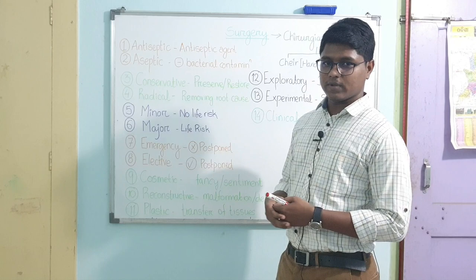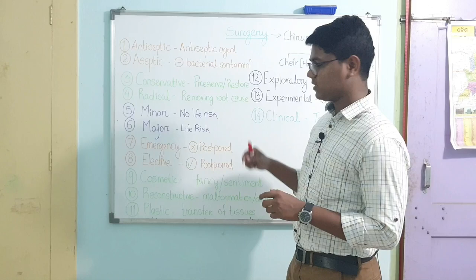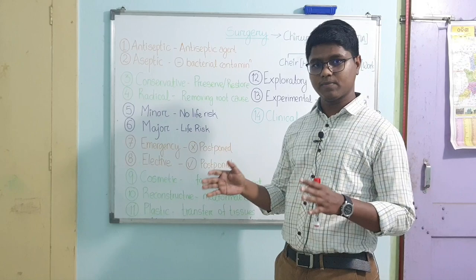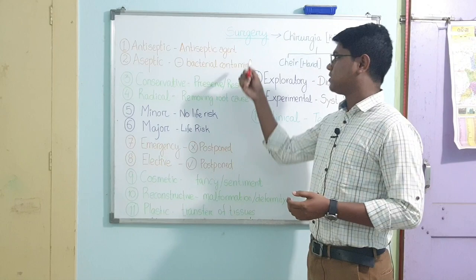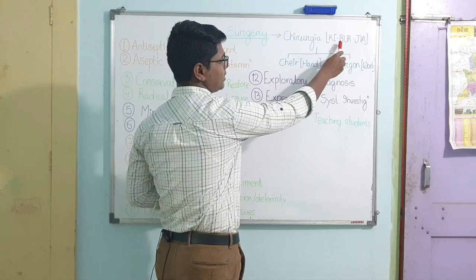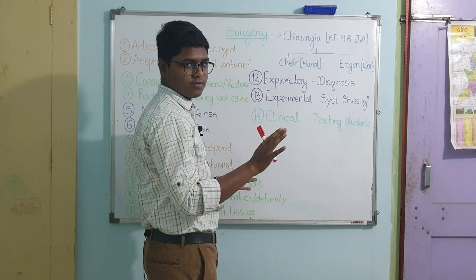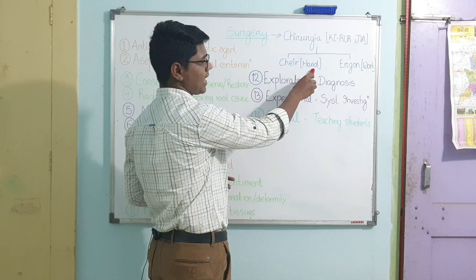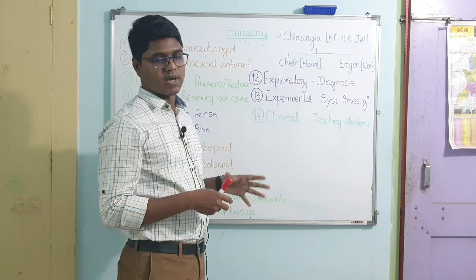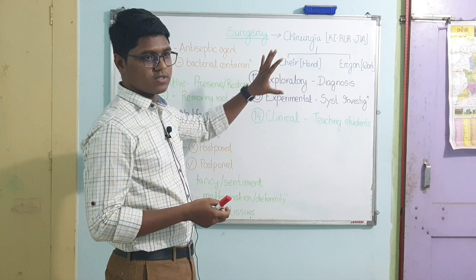Let us start from our first subject, that is principles of surgery, and this is basically the introduction part. From the next lecture video we will start the main principles of surgery. First of all, the word surgery comes from 'kirurgia' — spelled as k-i-r-u-r-g-i-a — which is a combination of two words: 'cheir' meaning hand, and 'ergon' meaning work. That means surgery deals with manual procedures or work by hand for treatment of animals.